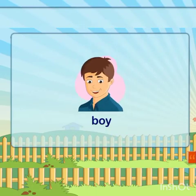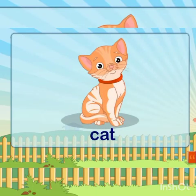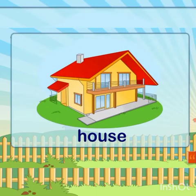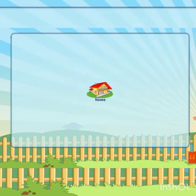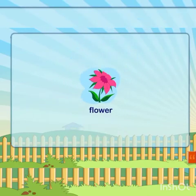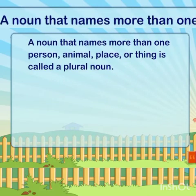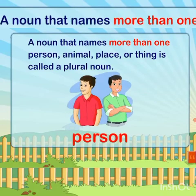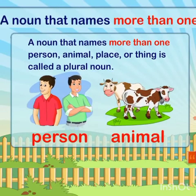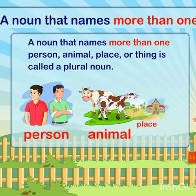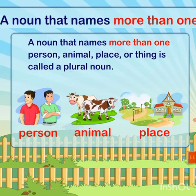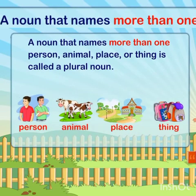One boy, one cat, a house, a flower — they are all singulars. A noun that names more than one person, animal, place, or thing is called a plural noun.